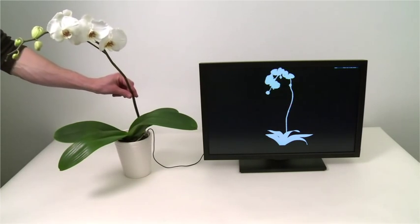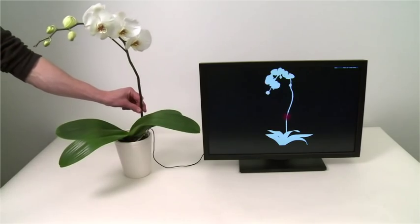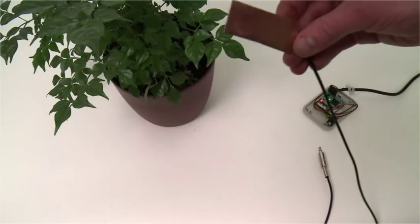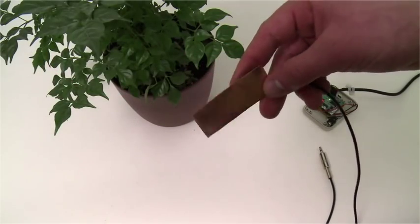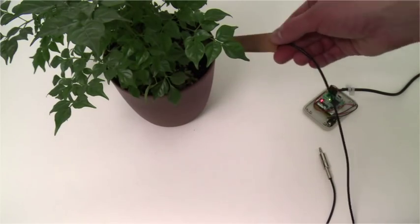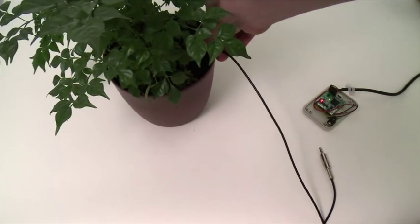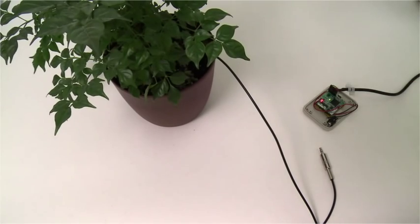Botanicus Interacticus is a new interactive plant technology. It requires no plant instrumentation. A simple electrode placed in the soil turns any plant into an expressive, multi-touch, gesture-sensitive controller.